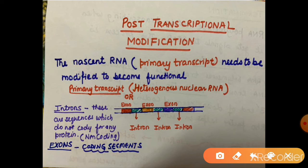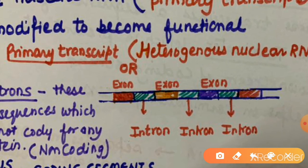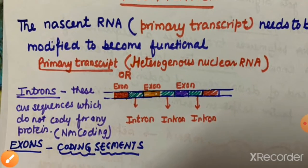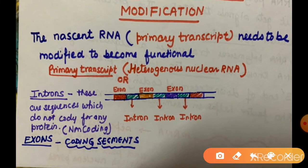Now the last important topic: post-transcriptional modification. After transcription, the RNA that is formed is called the primary transcript. This RNA is a heterogeneous RNA - it is not yet a proper functional messenger RNA. Why? Because in eukaryotes, the newly formed messenger RNA contains special portions called exons and introns - exon, intron, exon, intron, exon, intron alternating.